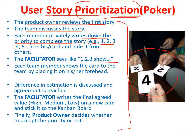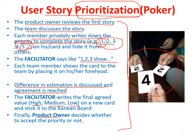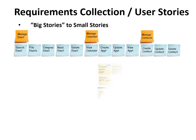The facilitator says one, two, three and everyone reveals their card. Differences in estimation are discussed and an agreement is reached. The story is labeled high, medium, or low priority and placed on the Kanban board. For example, one means the lowest priority and five means the highest priority. Finally, the result is shown to the product owner. That's all — thank you very much, and please ask if you have any questions.